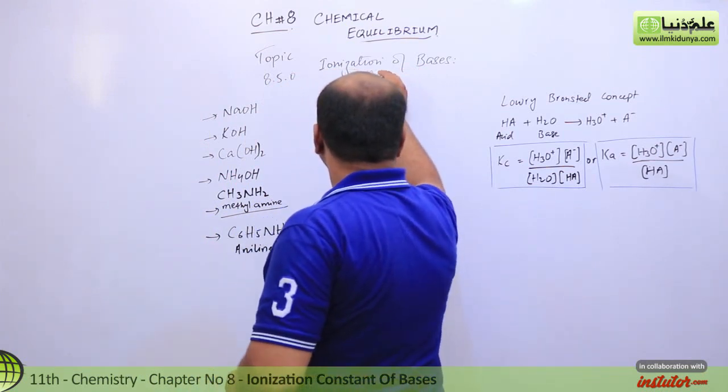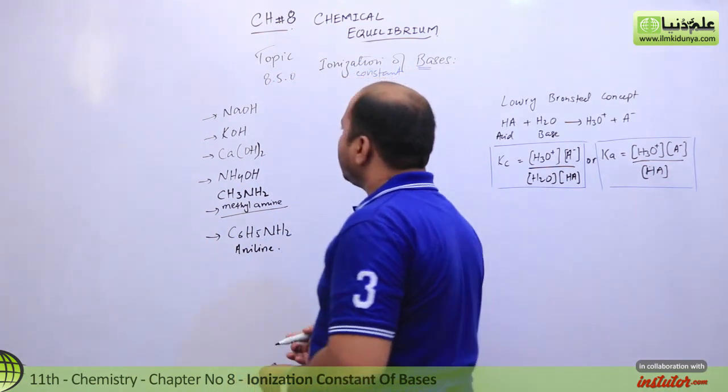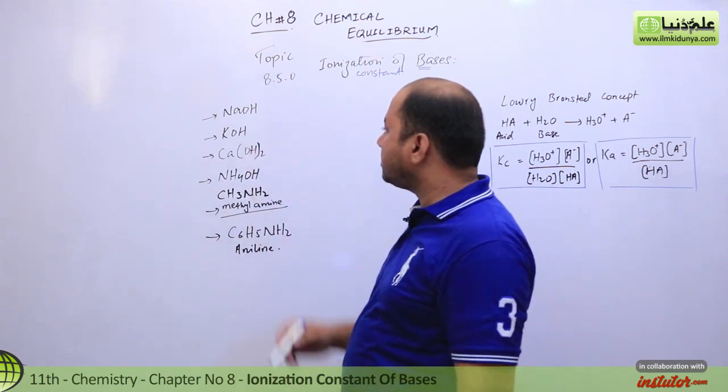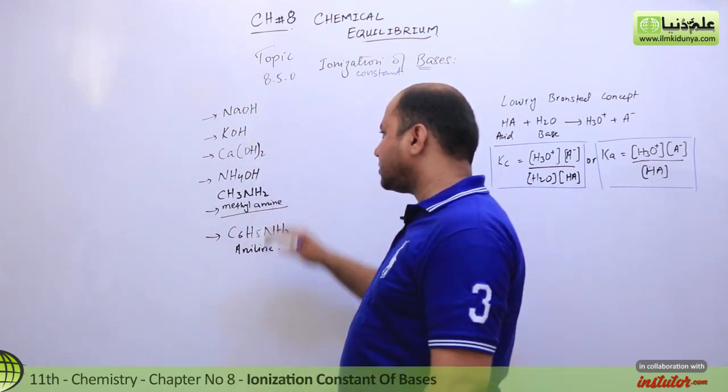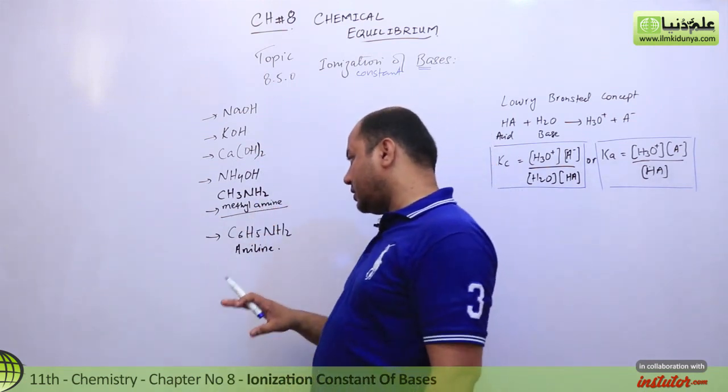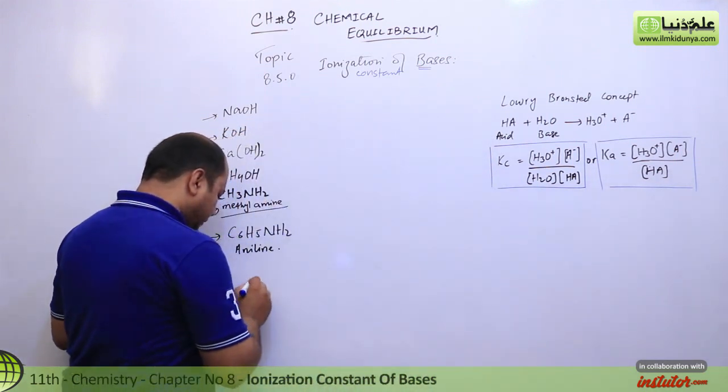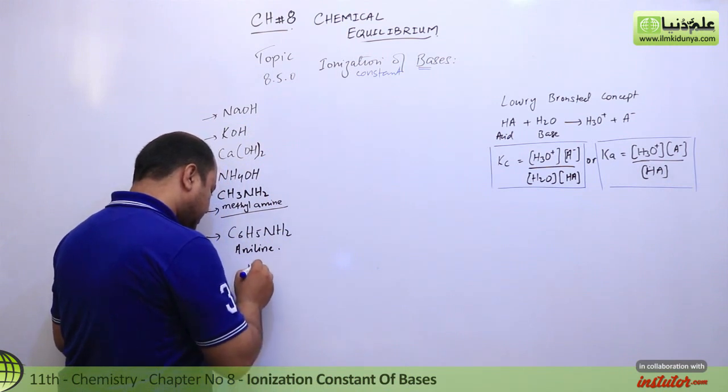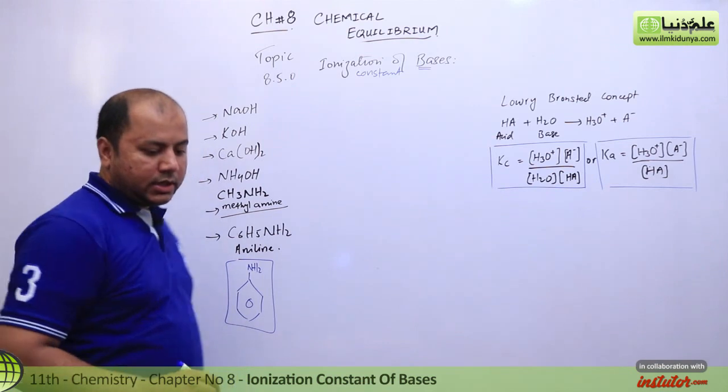Ionization constant of bases. We have some names over here of bases like sodium hydroxide, potassium hydroxide (caustic soda, caustic potash), calcium hydroxide, ammonium hydroxide, methylamine (basic in nature), and aniline, also a kind of compound which is something like basic in nature. That's the structural formula for aniline.